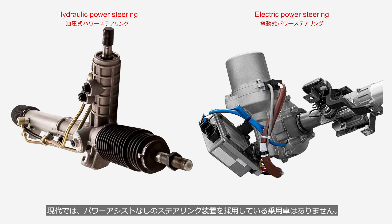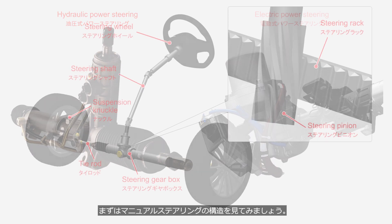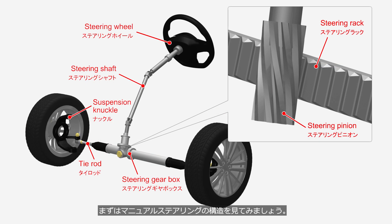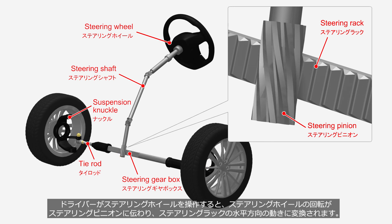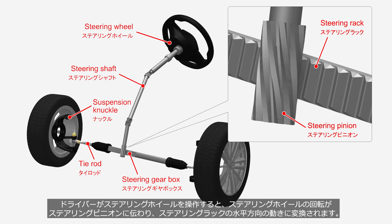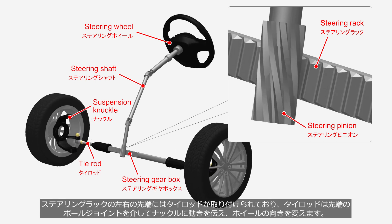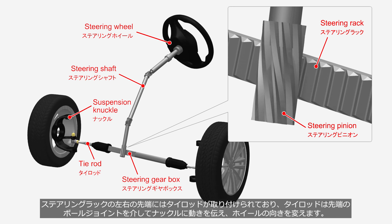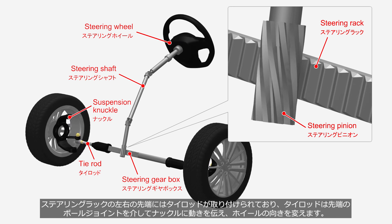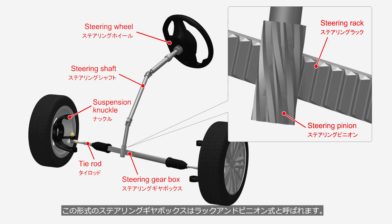There are no modern passenger cars that adopt steering systems without power assistance. However, the mechanism for turning the direction of the road wheels is the same regardless of power-assisted or not. So let's first take a look at the structure and operation of a manual steering system. When the driver operates the steering wheel, the rotation is transmitted to the steering pinion, which is then converted into horizontal movement of the steering rack. On both left and right ends of the steering rack, tie rods are attached. The tie rods transmit motion to the suspension knuckle through the ball joints at their ends, thus turning the direction of the road wheels. This type of steering gearbox is referred to as a rack-and-pinion system.